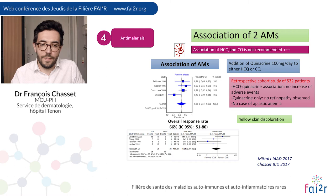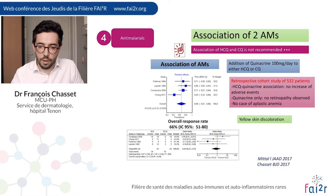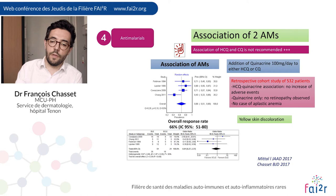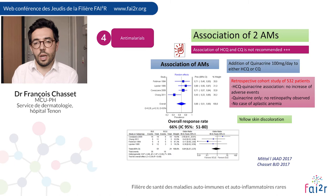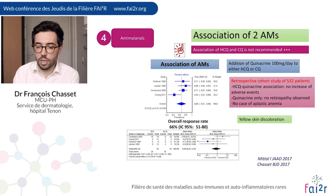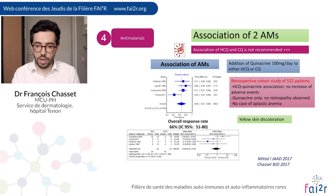In case of failure of a first line of anti-malarials, it is possible to add quinacrine to either hydroxychloroquine or chloroquine. This is associated with improvement in about two-thirds of patients. There was a pharmacovigilance signal regarding the risk of aplastic anemia, which has not been confirmed in a large study of more than 500 patients published by Victoria Werth's team in 2017. It is also important to highlight the risk of yellow skin discoloration in patients treated with quinacrine.